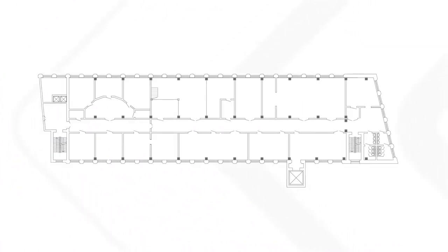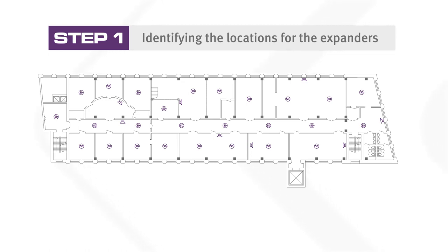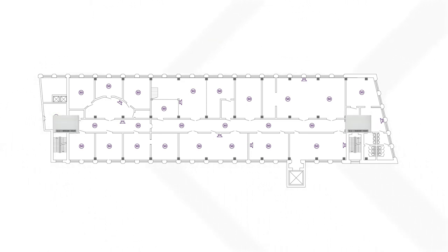Let's have a look at the process of designing the wireless network for a typical multi-storey building. The first step is identifying the location of the expanders on the floor plans. Start by putting two expanders on the opposite ends of the floor.